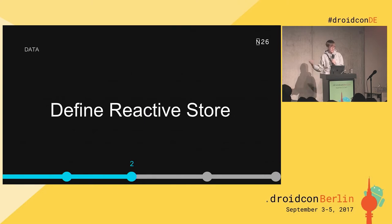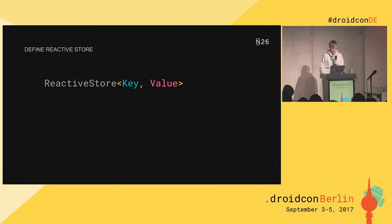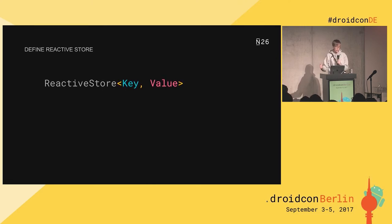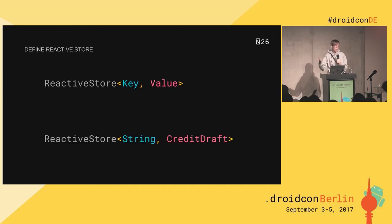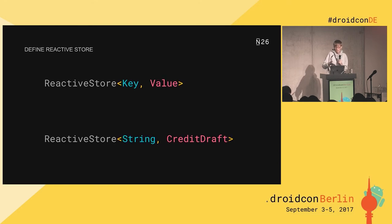Now, second step: we define this reactive store with a key type and value type. It's going to be a String-CreditDraft pair. The reason is that the ID in the CreditDraft is of type String, so String-CreditDraft.